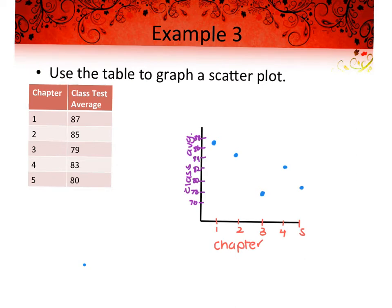Your scatter plot should look something like this — it doesn't have to be perfect or have exactly the same increments. I went from one to five on the bottom and started at 76, going up by twos; whatever you choose, just be consistent. What can you tell me about the correlation of this one? There's a negative correlation. The data shows test scores versus chapters — what can you infer from that? Maybe the chapters get harder as you go on.